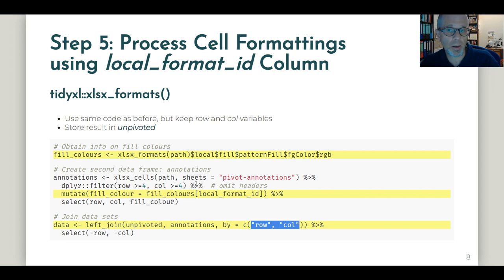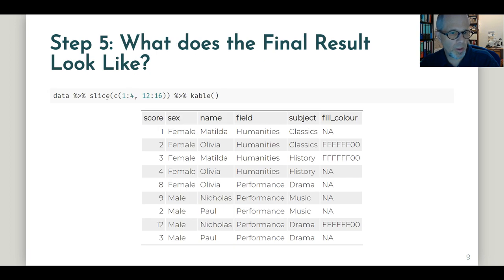So what does the final dataset look like then? It looks like this. The first five columns are the same that we saw before. And now we have this additional column fill_colour.